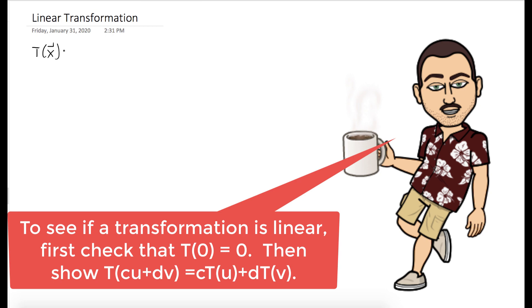So we want to check if the transformation that sends a vector to X1, X2, negative X3 is linear. The first thing we should do is check to make sure that it sends the zero vector to the zero vector, and it does. If it doesn't, then we're done. We would know it's not linear.